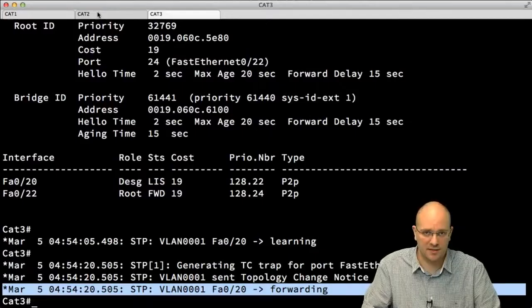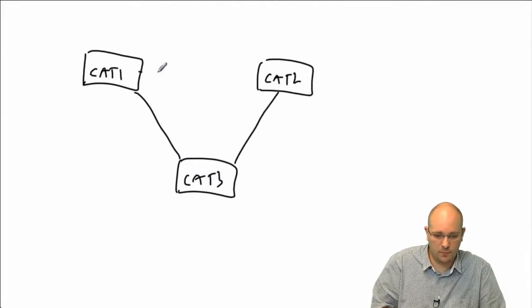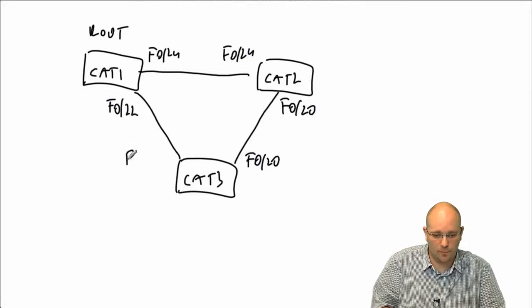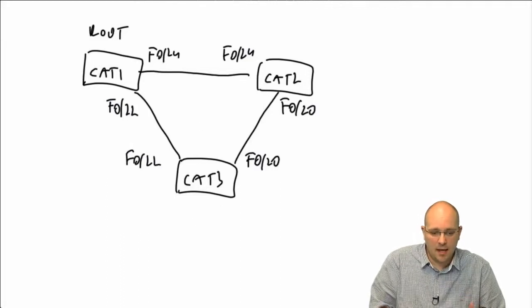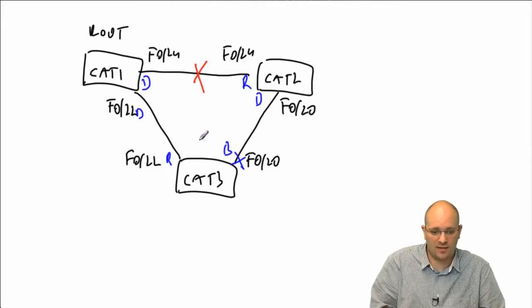Let's redraw our topology on the whiteboard. We have cat1 as the root, cat2, and cat3, with the same triangle of links. We know that one port is the blocking port, the others are designated ports and root ports. Let's examine what happens when the link between cat1 and cat2 fails again.